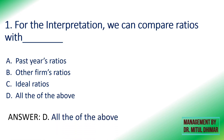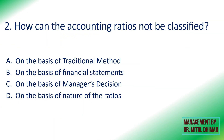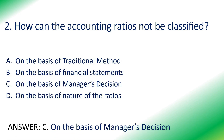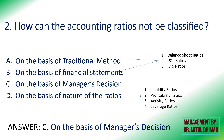Second: how can accounting ratios NOT be classified? Options are on the basis of traditional method, financial statements, manager's decision, or the nature of the ratio. The answer is manager's decision. The basis of financial statements is the second name for the traditional method — both classify as balance sheet ratios, P&L ratios, and mixed ratios. On the basis of nature, we classify as liquid, profitability, activity, and leverage ratios.